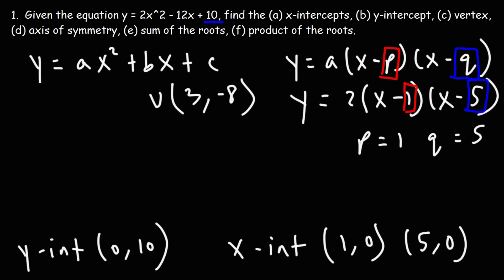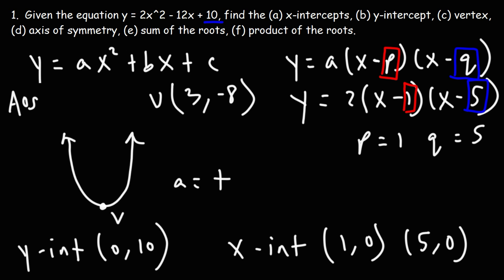Now let's determine the axis of symmetry, the AOS. This graph is a parabola that opens upward because a is positive. The vertex is right in the middle, and the axis of symmetry is a line that breaks the parabola into two equal parts and passes through the vertex. So the axis of symmetry is the x-coordinate of the vertex, which is 3. It's always x = h, where h is the x-coordinate of the vertex.